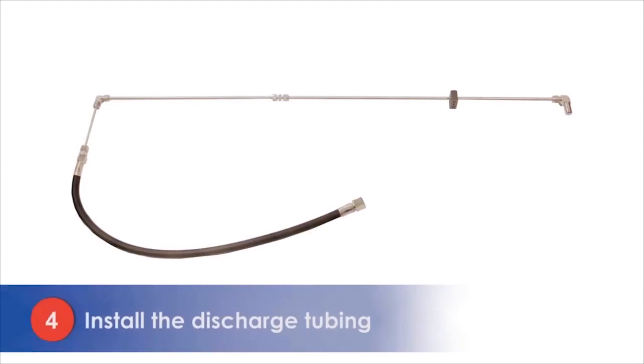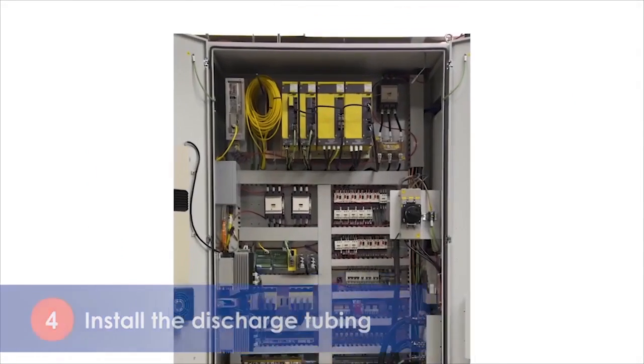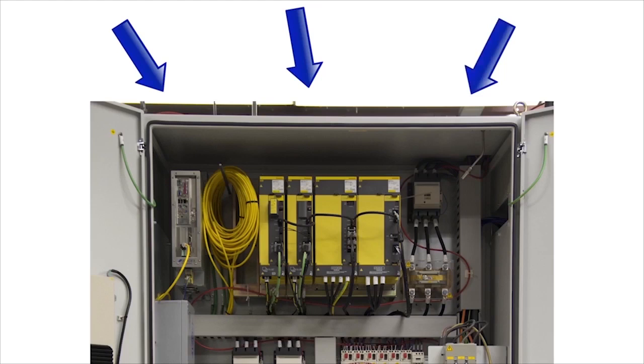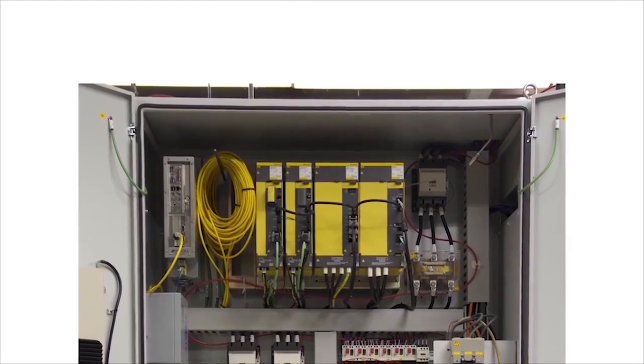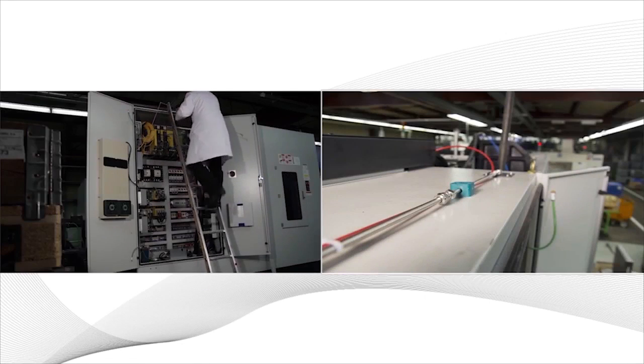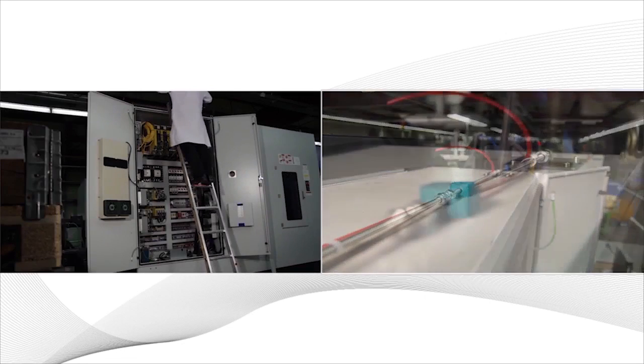The discharge system consists of the discharge tubing, fittings, and the nozzle. Start by identifying where you would like to place the nozzle. Ideally, it should be placed on the enclosure ceiling in the center, or if that is not practical, then on the side pointing towards the center. The discharge tubing is normally installed outside the cabinet.